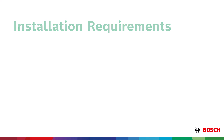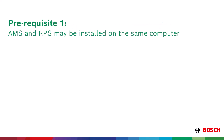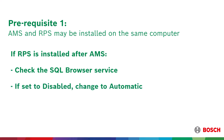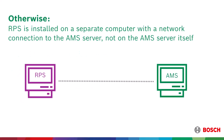Prerequisite 1: For small installations it is possible to install AMS and RPS on the same computer. If RPS is installed after AMS, check the SQL browser service, and if it has been set to disabled, change it back to automatic and then start it. Otherwise, RPS is installed on a separate computer with a network connection to the AMS server, not on the AMS server itself.